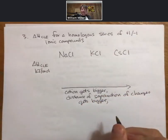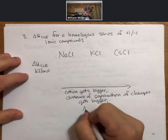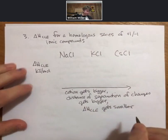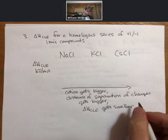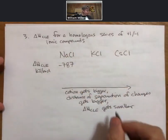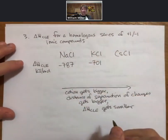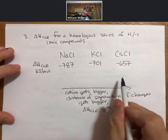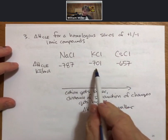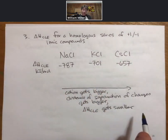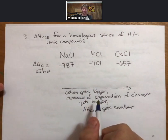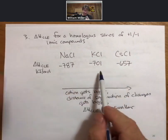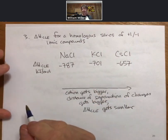Which means that the distance of separation of charges between the positive and the negative gets bigger, which means that the delta H crystal lattice energy gets smaller. That's what we're proposing. And if we look at these numbers now, we have minus 787 for sodium chloride, minus 701 for potassium chloride, and minus 657 for cesium chloride. So that trend, though not perfect, the crystal lattice energy does get smaller as the ions get bigger.